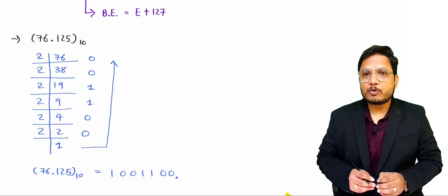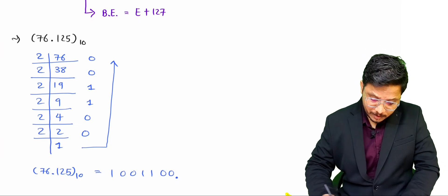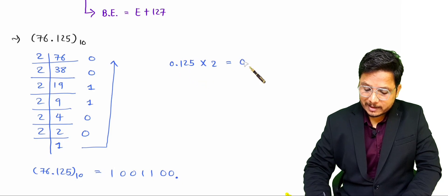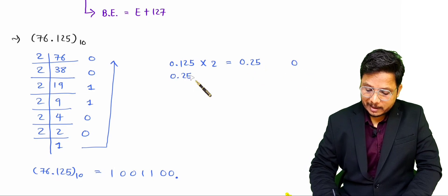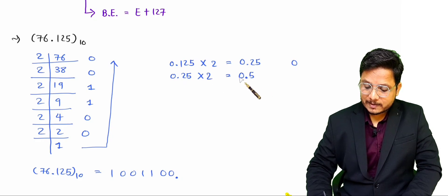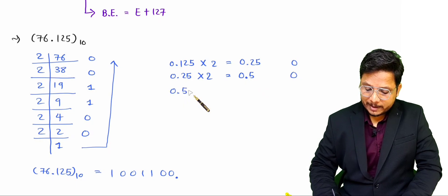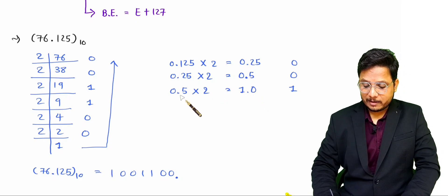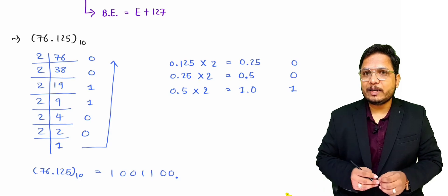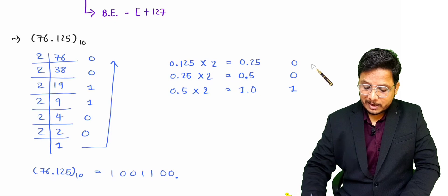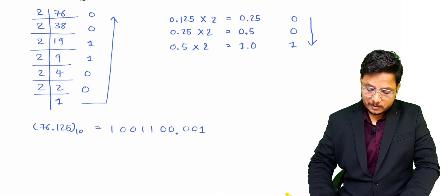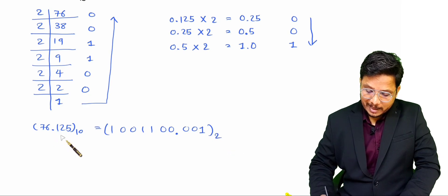Now convert the fractional part 0.125 by multiplying by 2 repeatedly. 0.125 × 2 = 0.25, write 0. Then 0.25 × 2 = 0.5, write 0. Then 0.5 × 2 = 1.0, write 1. Then 0.0 × 2 = 0, so we stop. Reading in order, 0.125 in binary is 0.001. So the full binary equivalent is 1001100.001.